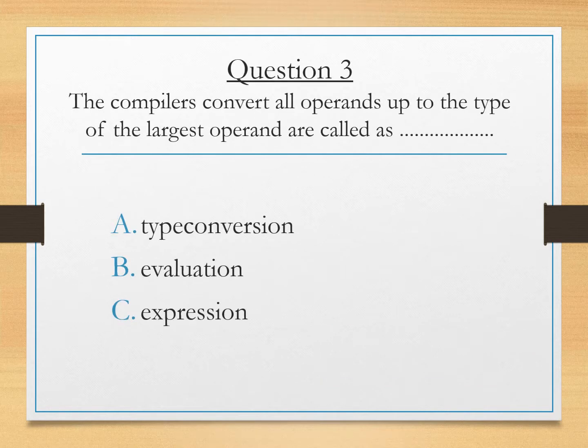Question 3. The compilers convert all operands up to the type of the largest operand are called as. Now when we use some operands then there might be a possibility that you may have variables of different data type. So to find the result some operands are converted to the other type of operands. So that is known as type conversion. Right? So answer is A. Type conversion.